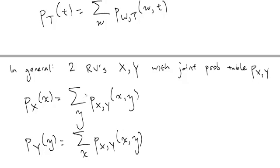When we sum out Y, this is also called marginalizing out random variable Y. You can think of this as summarizing the randomness of two random variables into just the randomness of one. And down here, we are marginalizing out X.